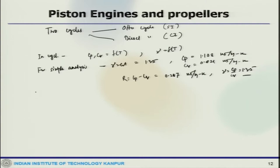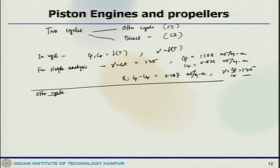Let us start with the Otto cycle, which is the cycle for the spark ignition engine. It was named after Nicholas Otto, who built a four-stroke engine successfully in Germany in 1876. In most spark ignition (SI) engines, the piston executes four complete strokes — two mechanical strokes within the cylinder — and the crankshaft completes two revolutions. These are called four-stroke internal combustion engines.